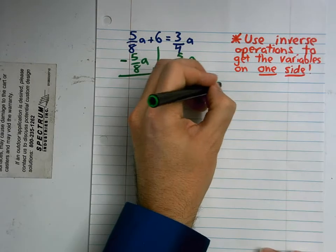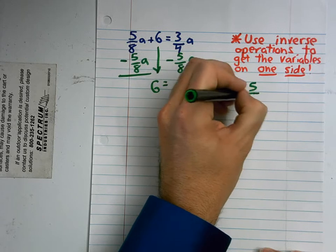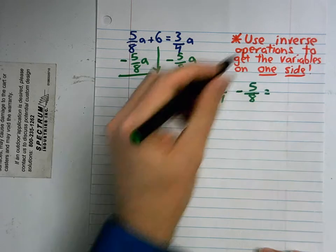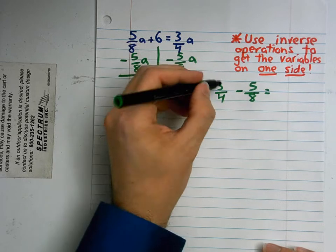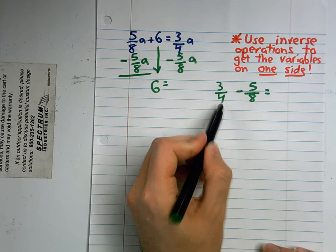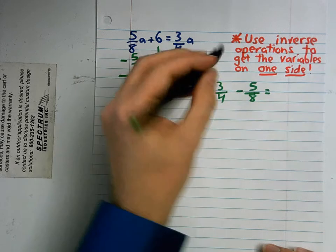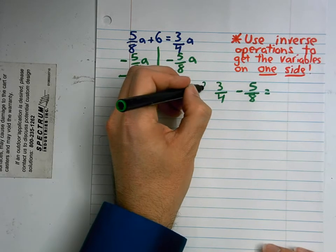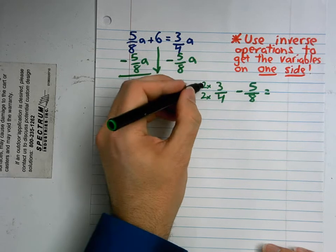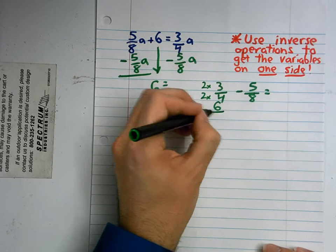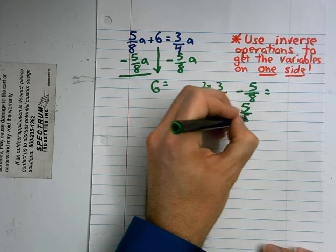I'm going to go 3/4ths minus 5/8ths. And I'm going to have to find a common denominator. Now the good news is, 8 is a multiple of 4, so it makes finding my common denominator really easy. I'm just going to multiply the top times 2 and the bottom times 2. So 3 times 2 is 6, 2 times 4 is 8.